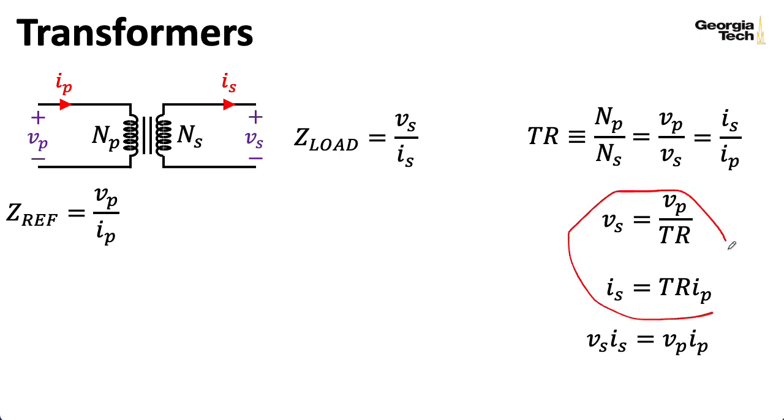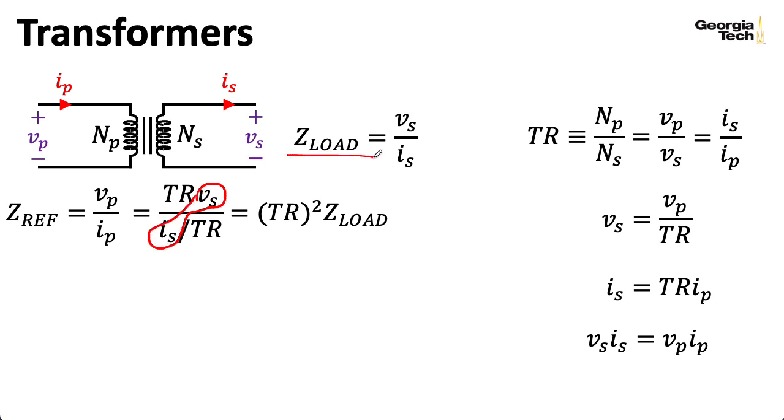Let me use the expressions on the right here in order to rewrite this in terms of the quantities associated with the secondary. So I can replace VP with TR times VS, and I can replace IP with IS divided by TR. And this gives me TR squared times VS over IS, which is the impedance of the load. So the turns ratio is the square root of the reflected impedance over the load impedance.